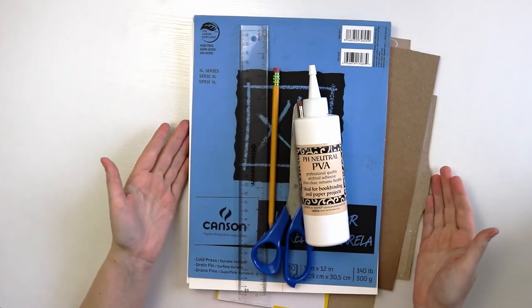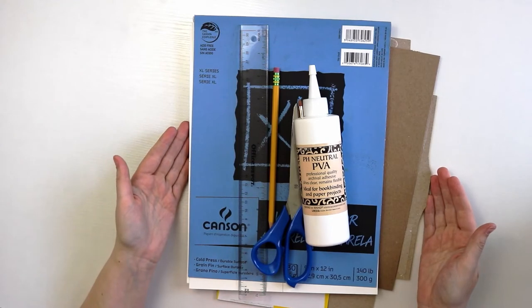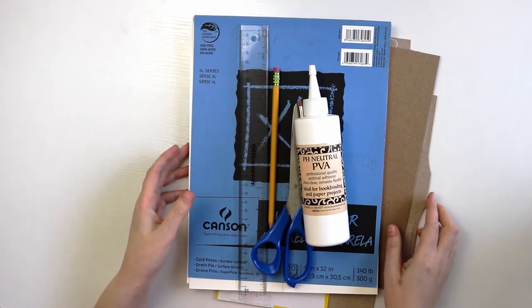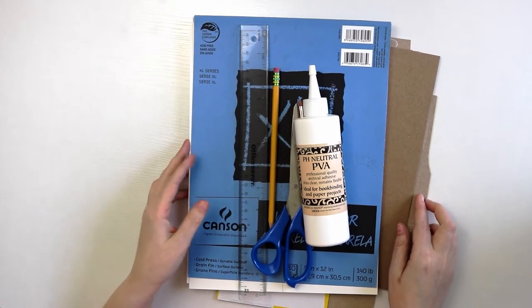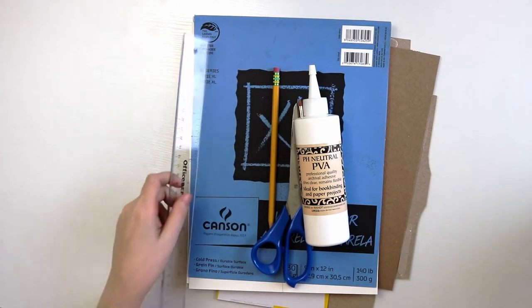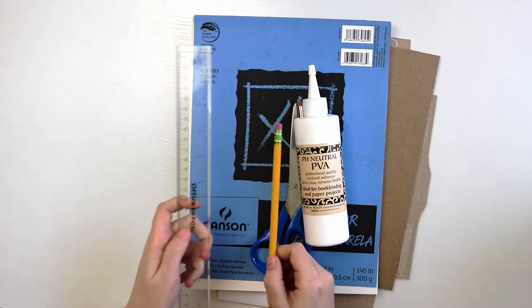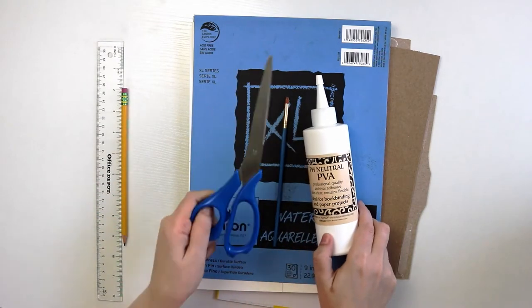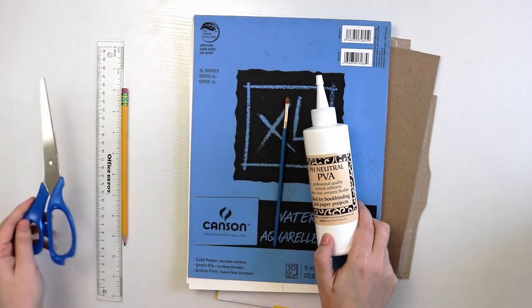Let's go over some of the items you're going to need to complete this project. I will leave links to some of the items in the description below if you are interested in purchasing them. So first you're going to need a ruler and a pencil to make your measurements. You're going to need a pair of scissors to cut your paper or a paper trimmer.